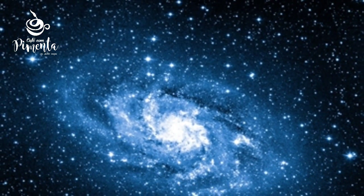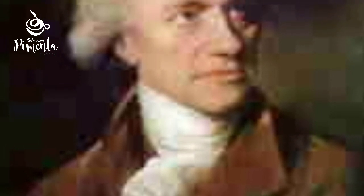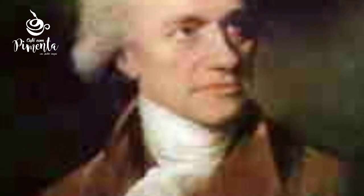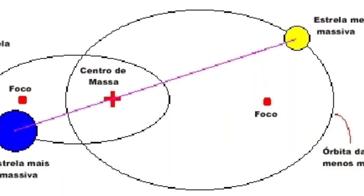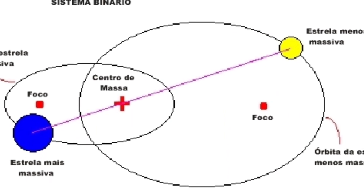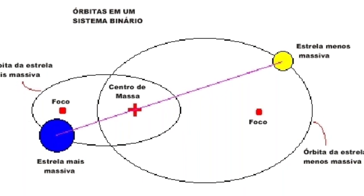O termo binária foi utilizado pela primeira vez no contexto atual por William Herschel, em 1802, ao que ele escreveu: se ao contrário, duas estrelas estão realmente situadas bem próximas uma da outra e ao mesmo tempo isoladas de tal jeito que não são afetadas materialmente pela atração de estrelas próximas, tais estrelas compõem um sistema à parte, permanecem unidas pela ligação gravitacional mútua. Este sistema deve ser chamado de um sistema binário real, e quaisquer duas estrelas assim conectadas formam um sistema sideral binário.